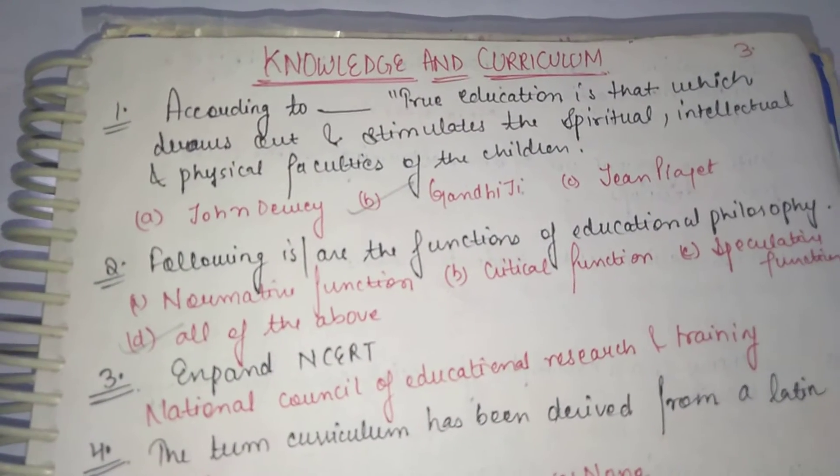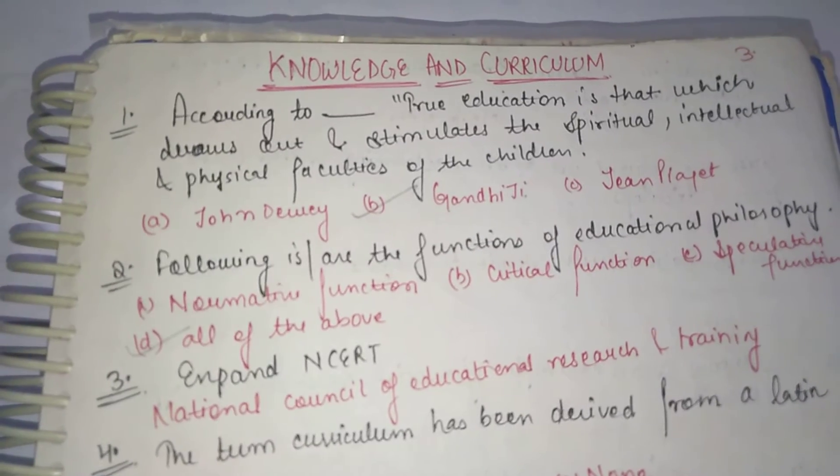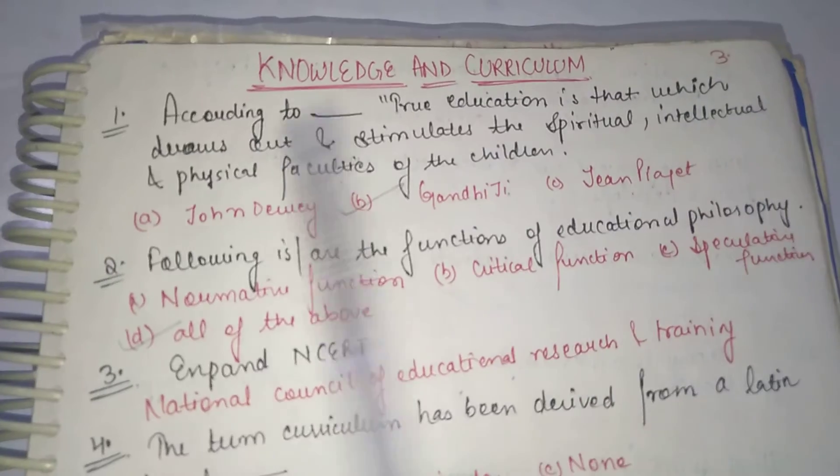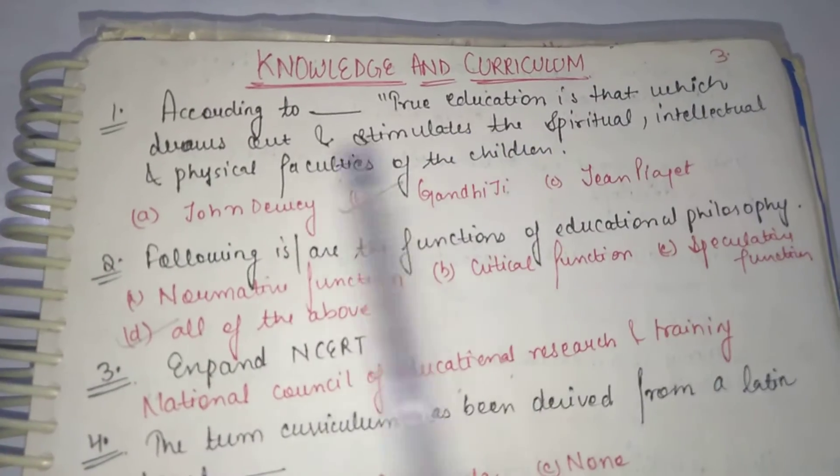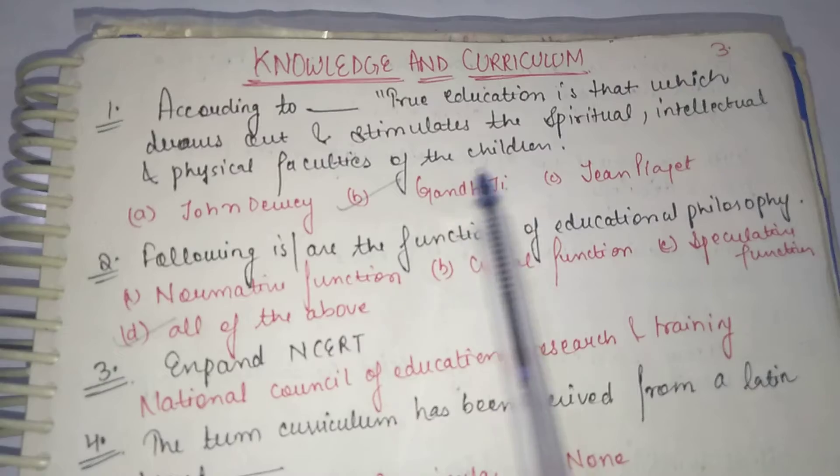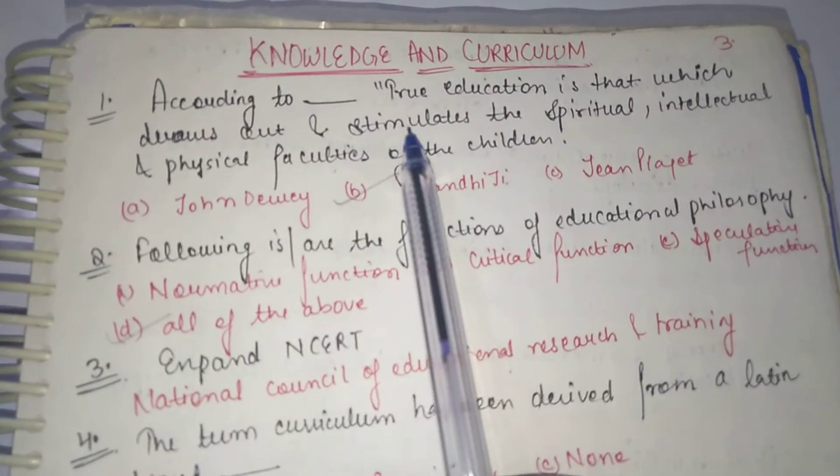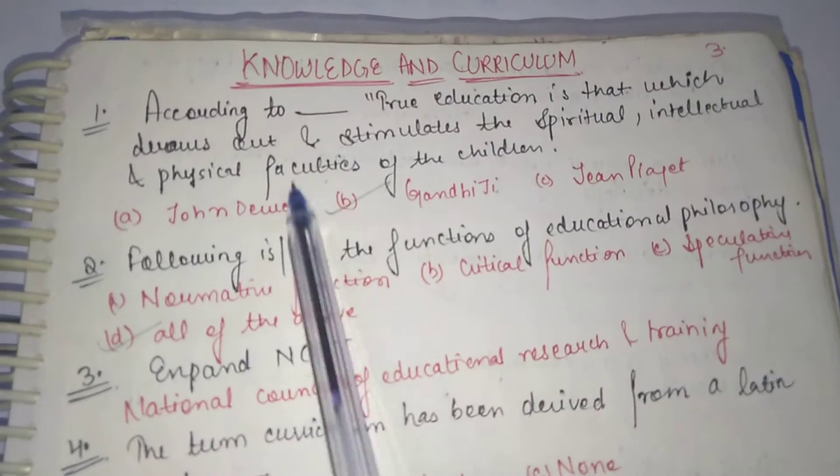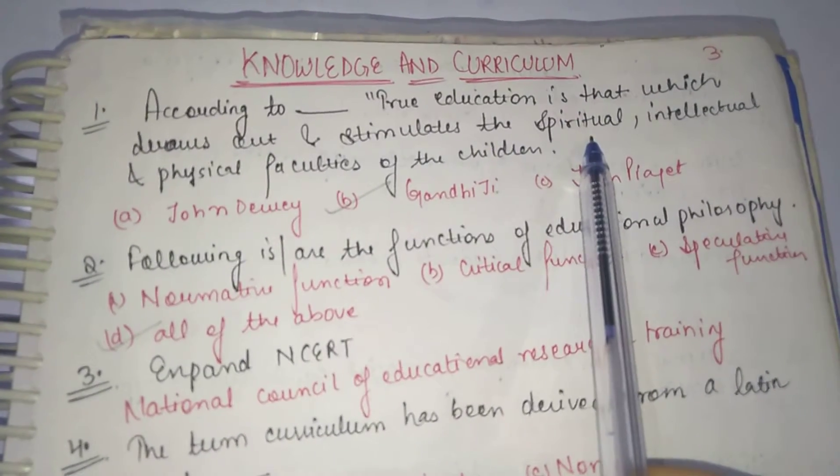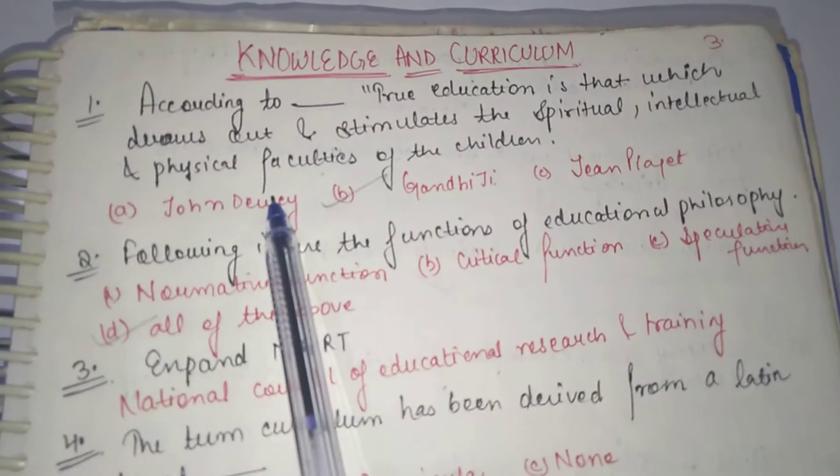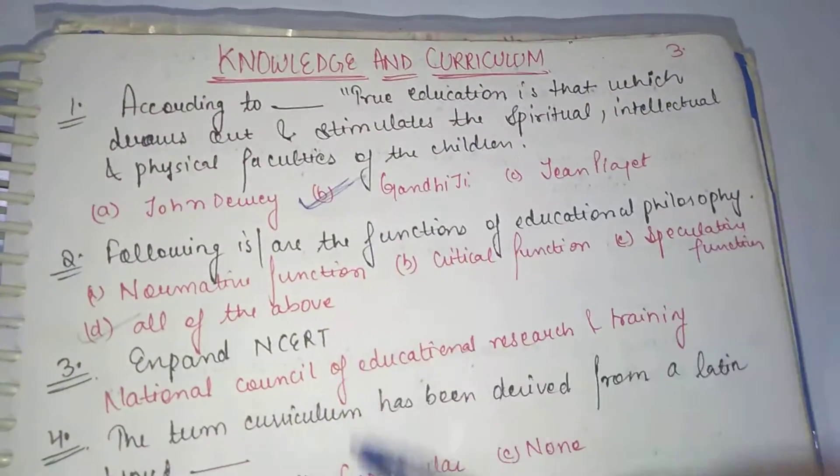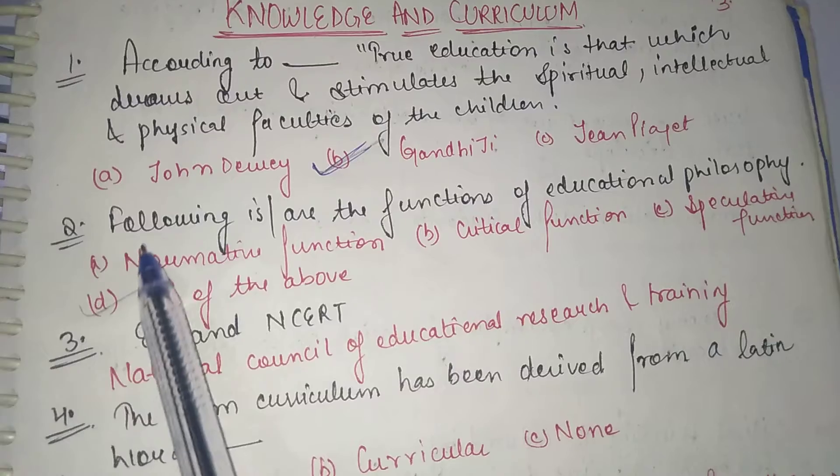Let's start with our first question. According to Dash, true education is that which draws out and stimulates the spiritual, intellectual and physical faculties of the children. Who has said it? So it is according to Gandhiji. Our correct option is Gandhiji.